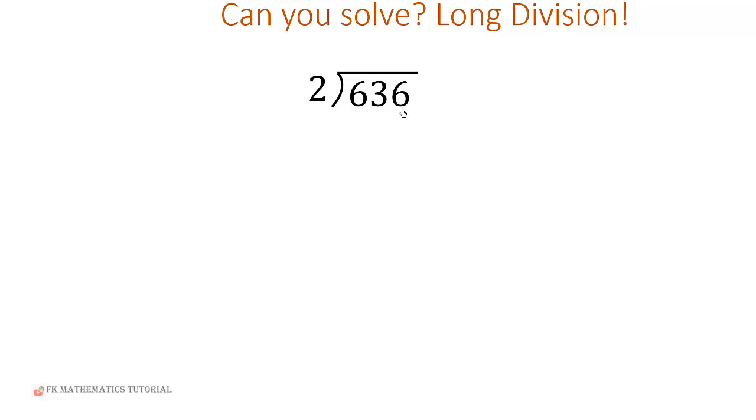We can use the properties of operations and the concept of place values to perform long division. So we have 636 divided by 2.